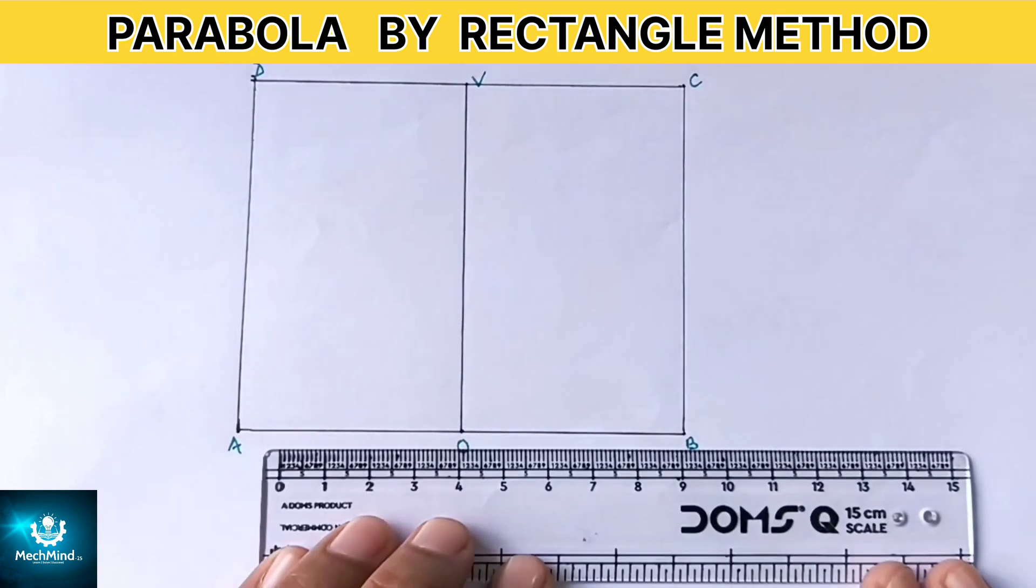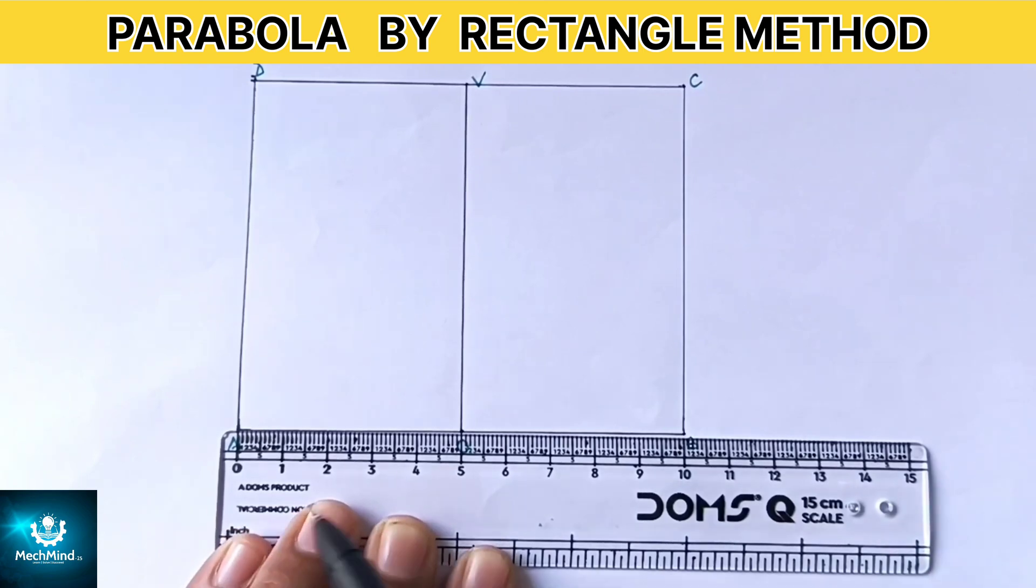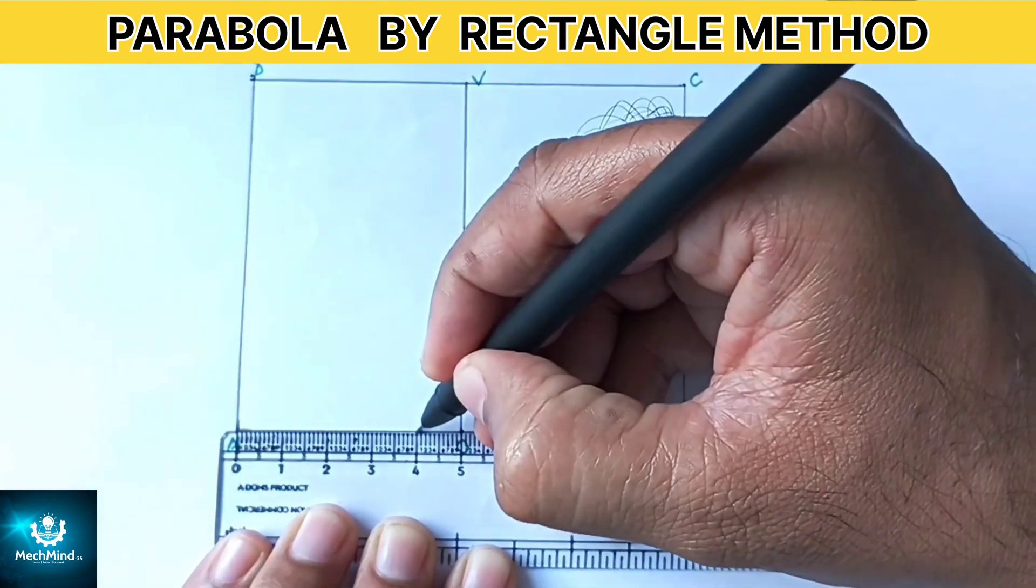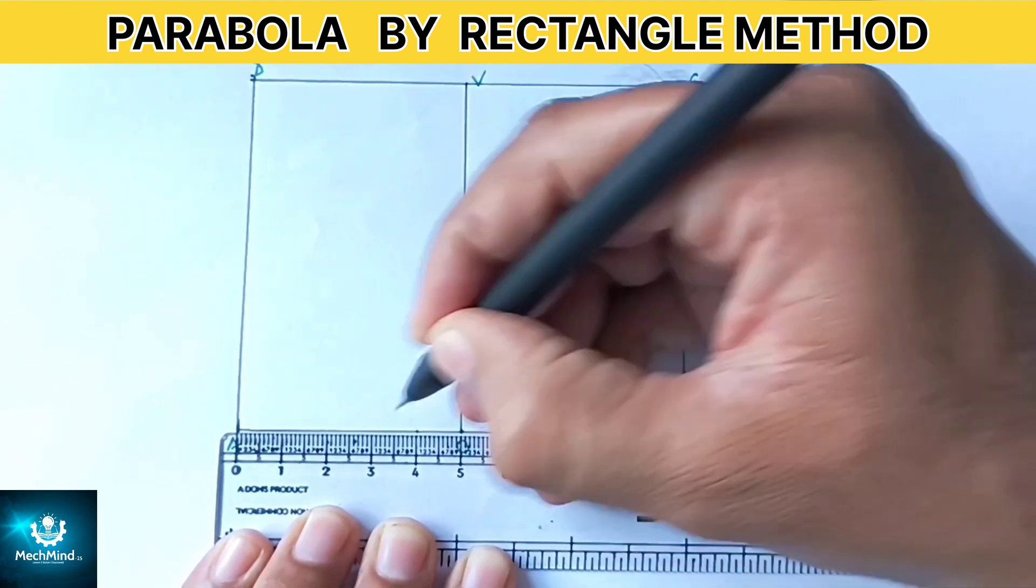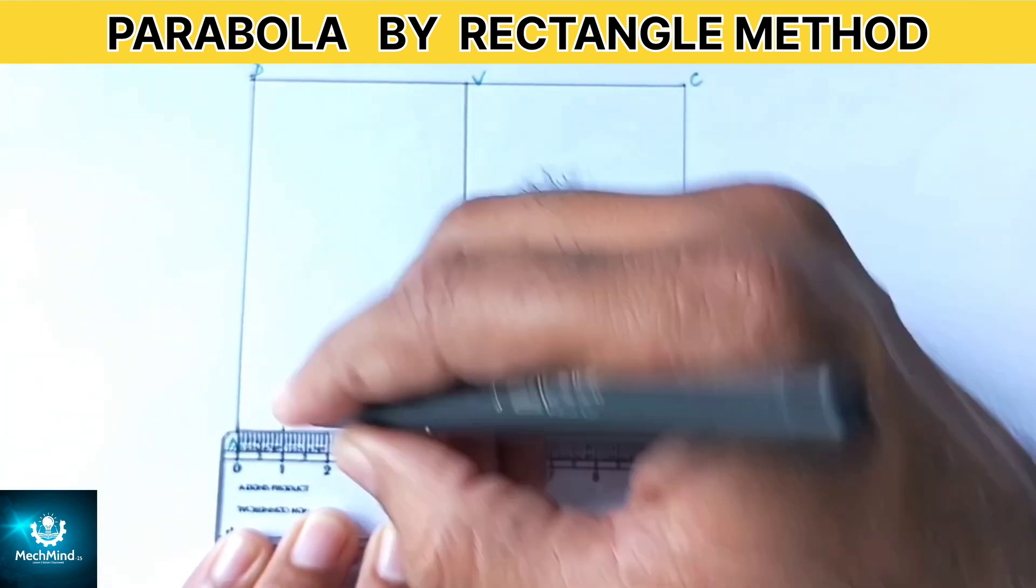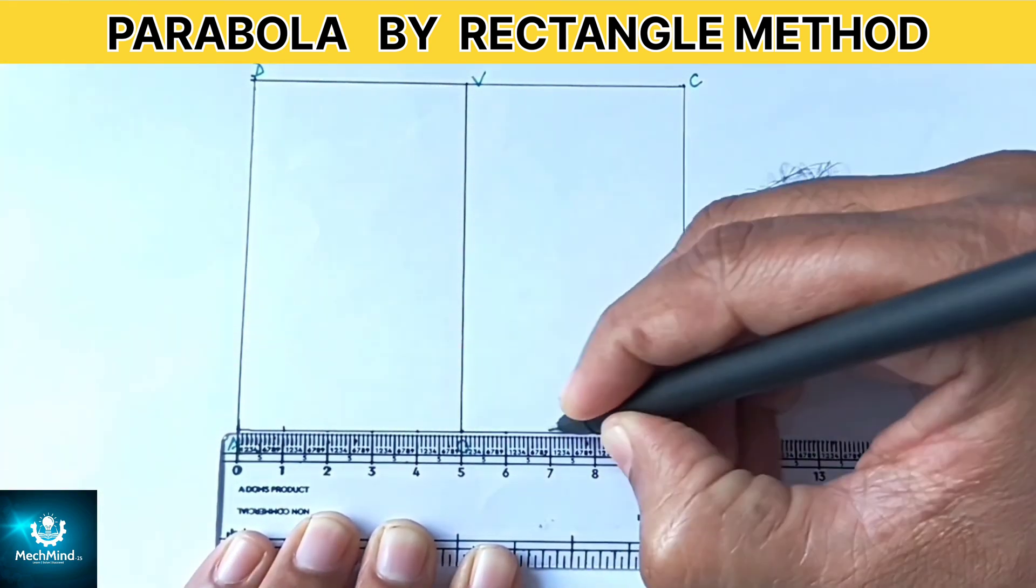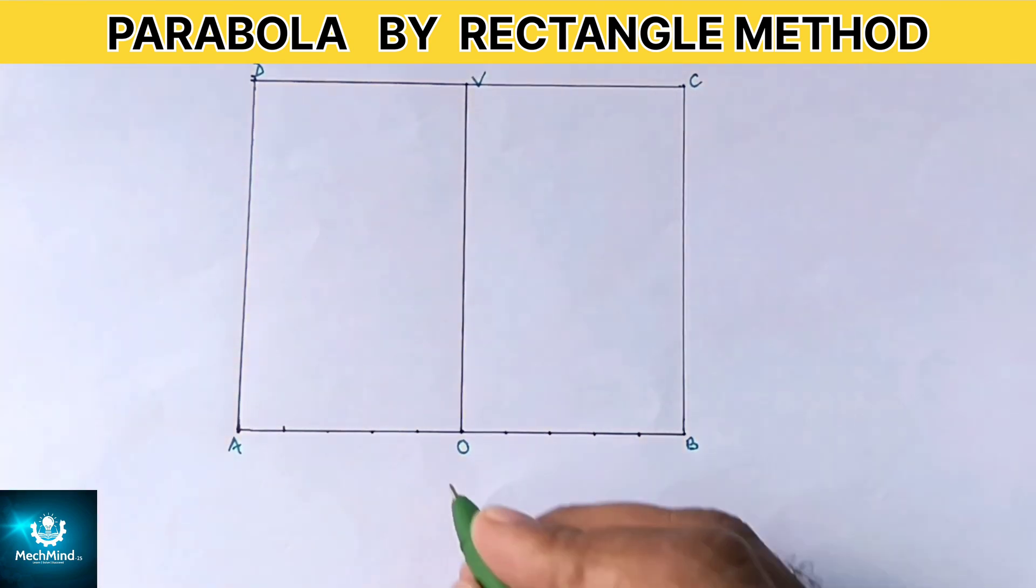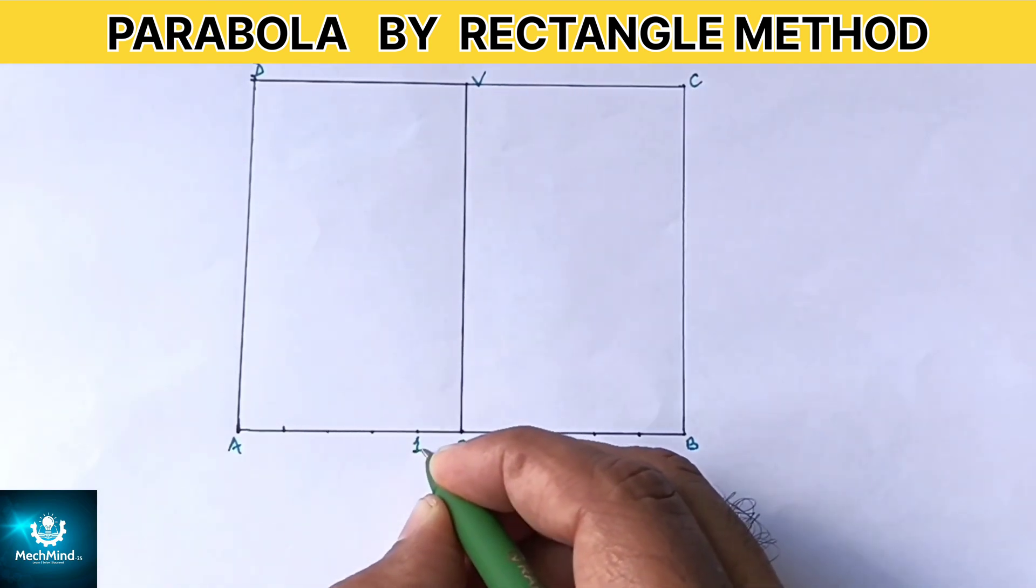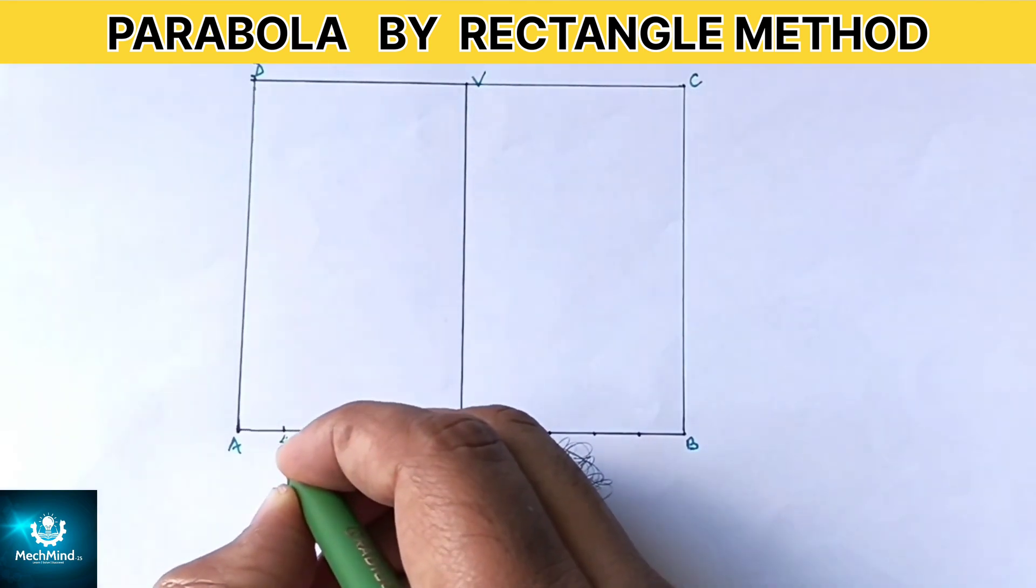Next divide line OA into equal number of parts. Let's take 5 equal divisions for simplicity, each division of 10 mm. Similarly divide on the right hand side and mark these divisions as 1, 2, 3, 4 and 5 on both sides of the axis.